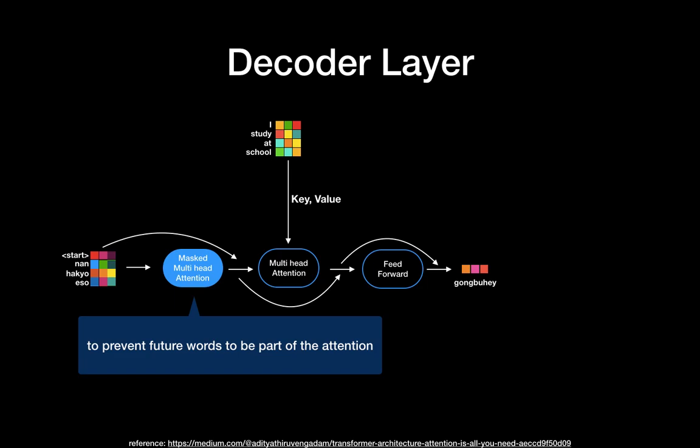The decoder has very similar architecture, but the difference is the first multi-head attention is masked multi-head attention. The masked multi-head attention is nothing but to prevent future words from being part of the attention.